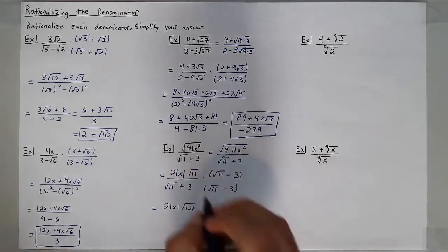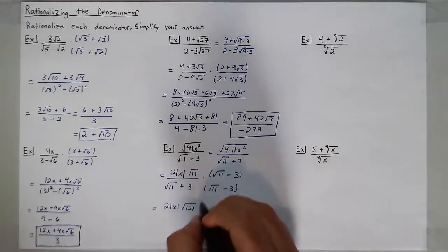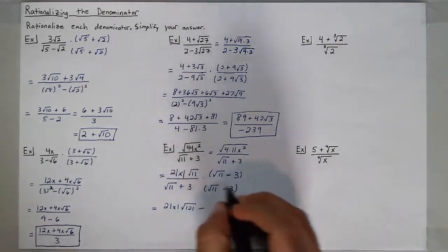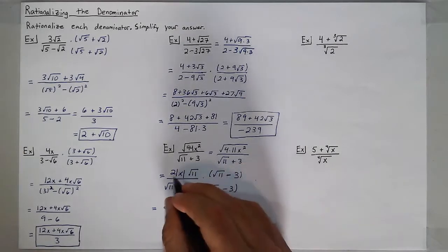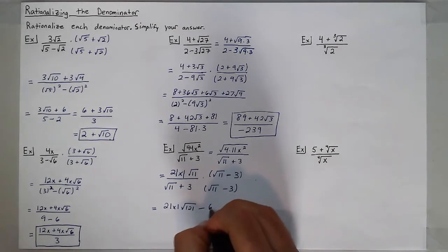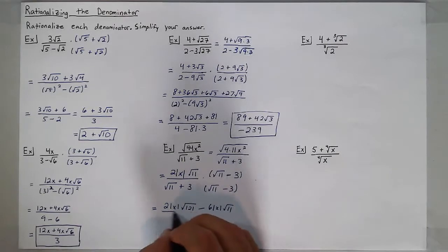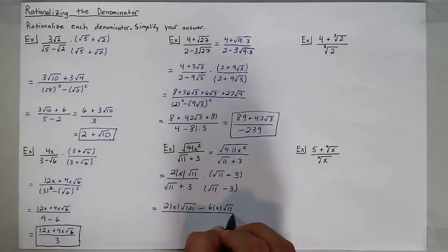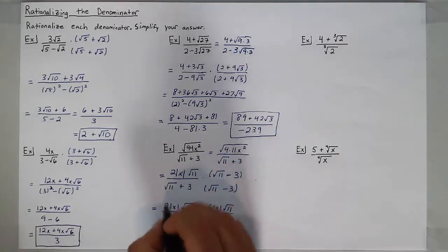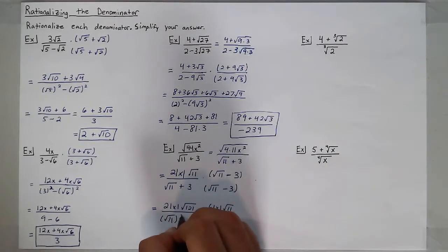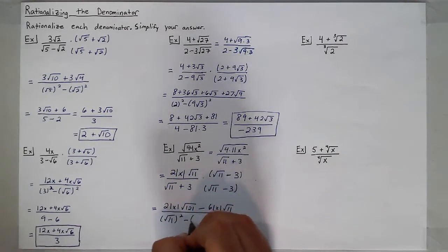That's 11 times 11, minus 6 times the absolute value of x times the square root of 11, all over the square root of 11 squared minus 3 squared.